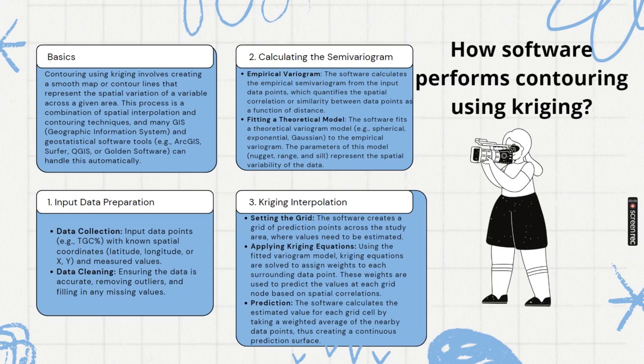Basic thing about kriging is contouring using kriging involves creating a smooth map or contour lines that represent spatial variation of a variable across a certain layer. For example, graphite TGC content percentage. Red color, dark values. For example, some contour map you must have seen. Easily you can visualize where that higher value is. This red color zone is higher value. Blue color is lower value. The contouring with coloring.